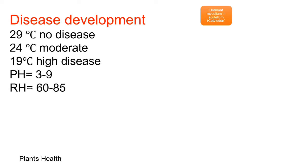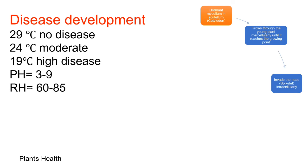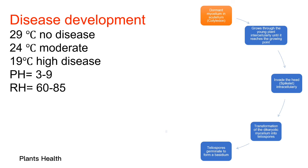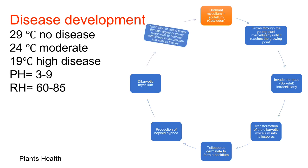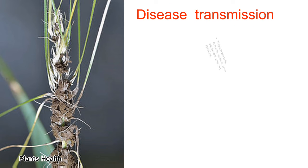The mycelium is dormant in the cotyledon or coleoptile. The mycelium of the loose smut fungus then grows through the young plant intercellularly until it reaches the growing point, where the head spike develops, and grows intracellularly. Transformation of the dikaryotic mycelium into teliospores occurs there. Teliospores germinate to form basidium and produce haploid hyphae and dikaryotic mycelium, which then penetrate young tissue through the stigma or young ovary, becoming established in the pericarp and embryo tissue.